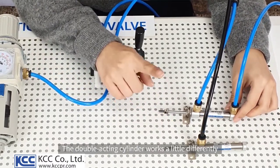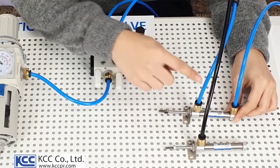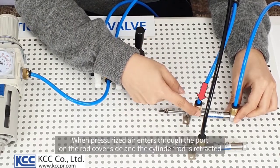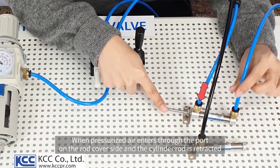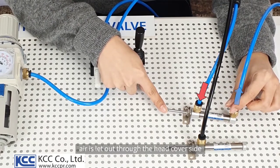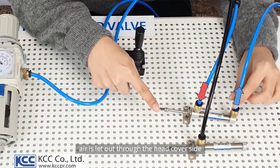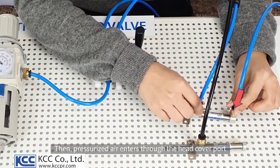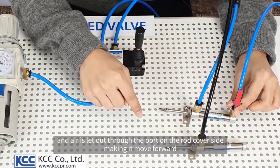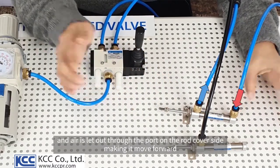The double-acting cylinder works a little differently. When pressurized air enters through the port on the rod cover side, and the cylinder rod is retracted, air is let out through the head cover side. Then pressurized air enters through the head cover port, and air is let out through the port on the rod cover side, making it move forward.